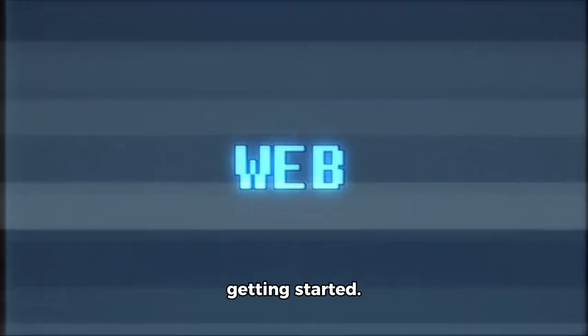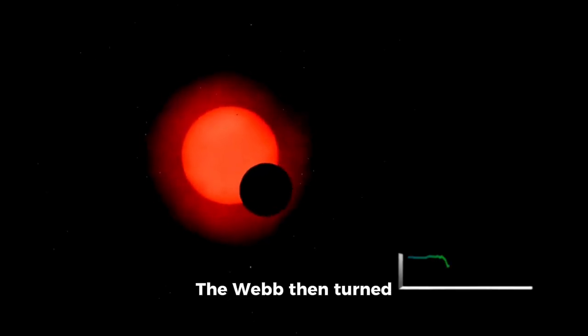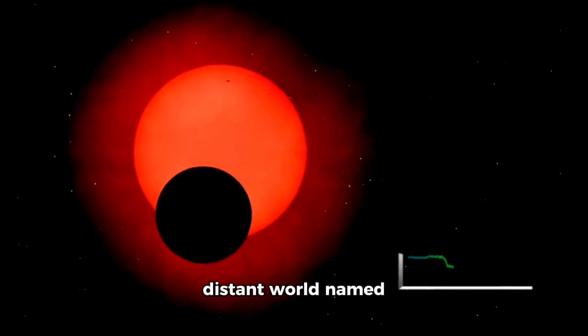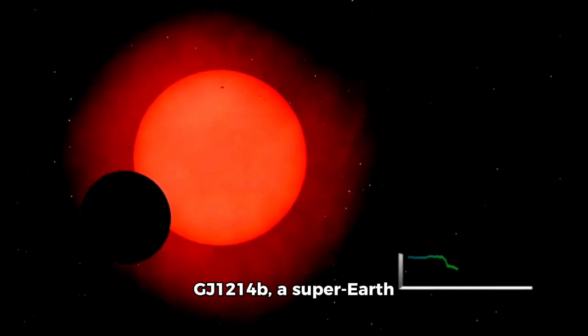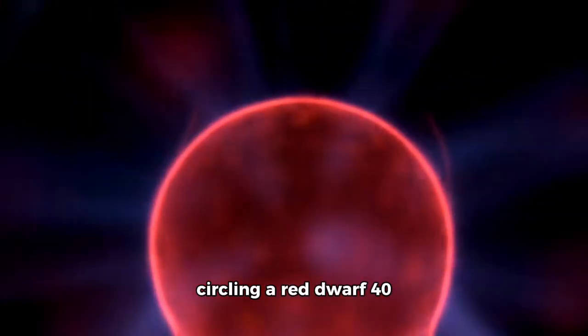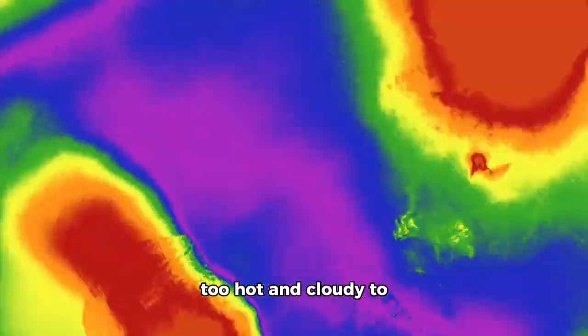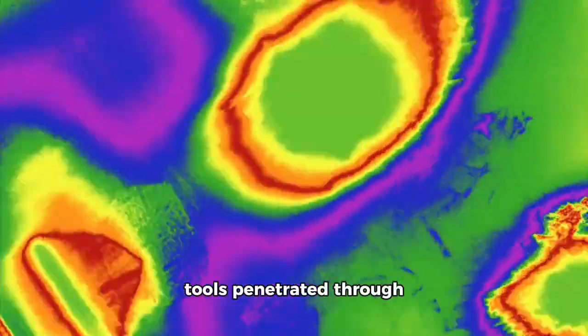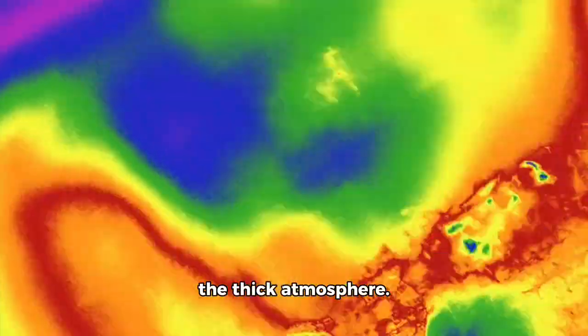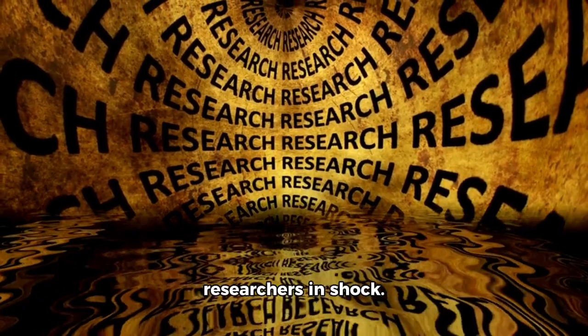But Webb was only getting started. The telescope then turned its attention to a distant world named GJ-1214b, a super-Earth circling a red dwarf 40 light-years away. Initially dismissed as too hot and cloudy to study, Webb's infrared tools penetrated through the thick atmosphere.